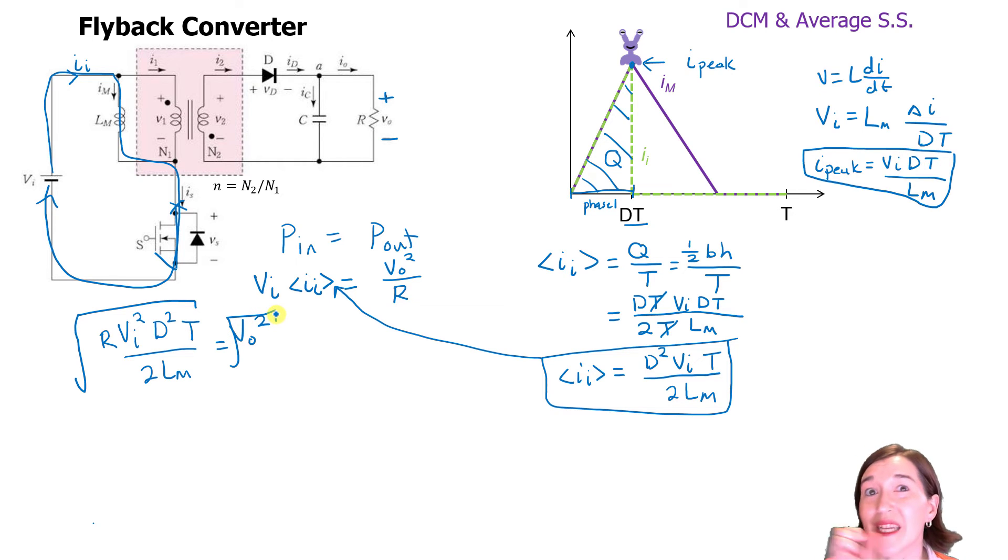Whenever we take the square root, we need to check there are going to be two solutions, right? So we might have a positive and maybe we'd have a negative, right? Do we have a negative? We have to think about what does negative mean in this context? So mathematically there's two solutions, but does the math make sense in real life? It's always about applying that.